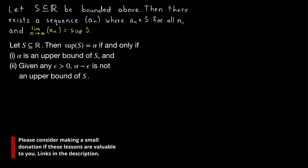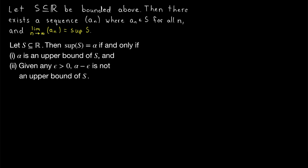Now that we've studied the supremum of sets and the limits of sequences, you may notice there is a good deal of similarity between the two concepts. In this lesson, we'll prove one of those connections. Let S be a subset of the real numbers that's bounded above. By the completeness axiom, S has a supremum. Then there exists a sequence Aₙ where every term is in S and the limit of the sequence is the supremum of S. Every set that is bounded above contains within it a sequence that converges to its supremum.